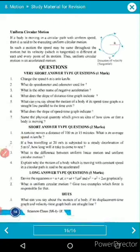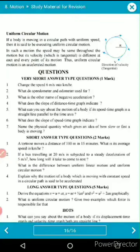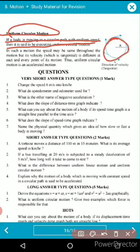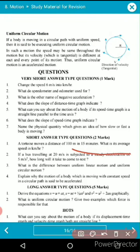If a body moves in a circular path with uniform speed, that motion is called uniform circular motion. An object moving in a circular path with uniform velocity is said to be in uniform circular motion.